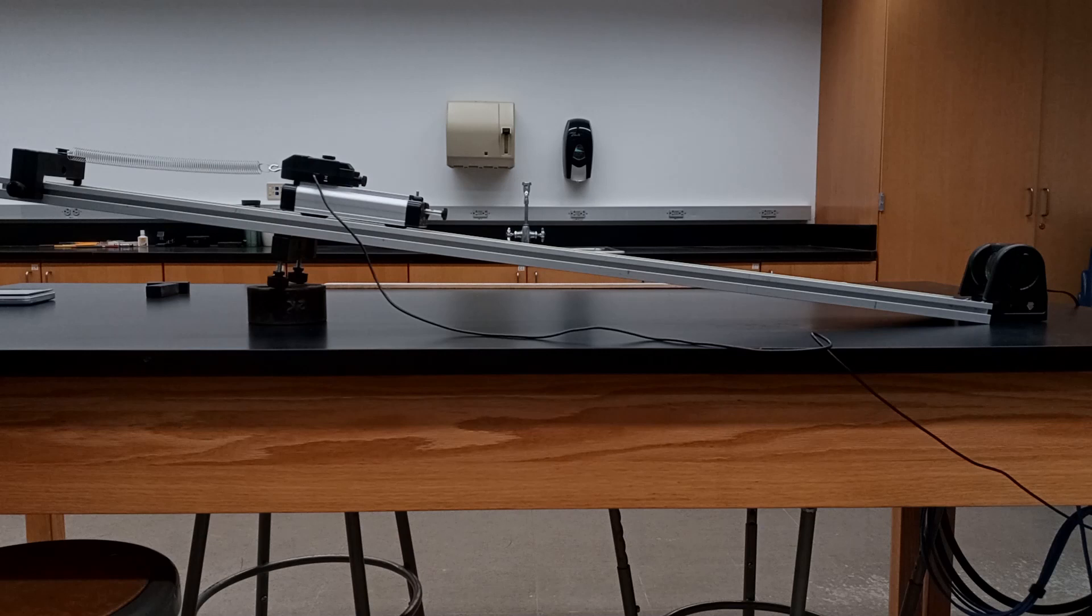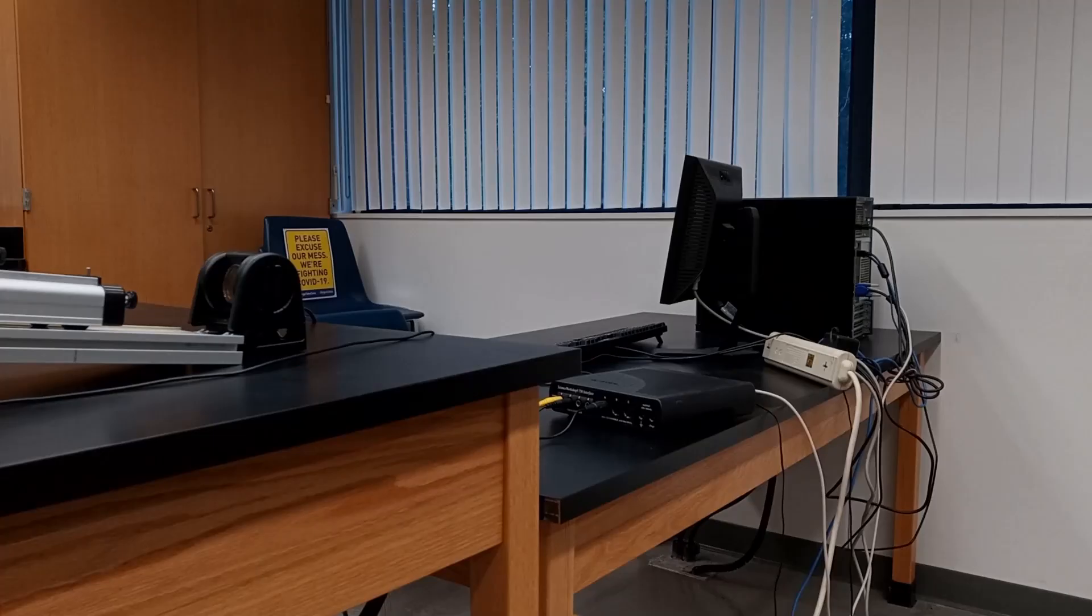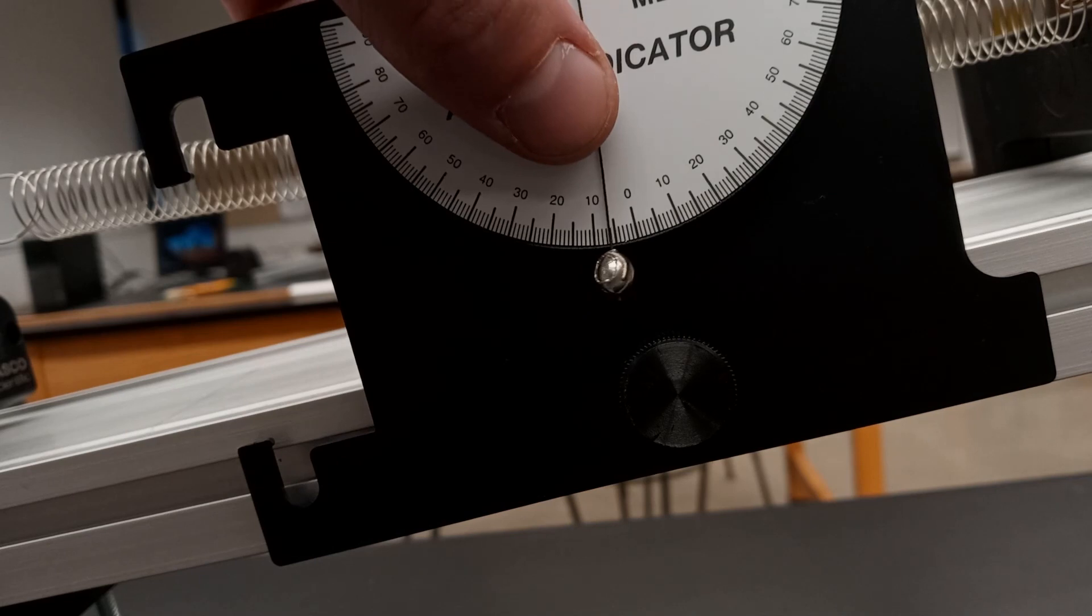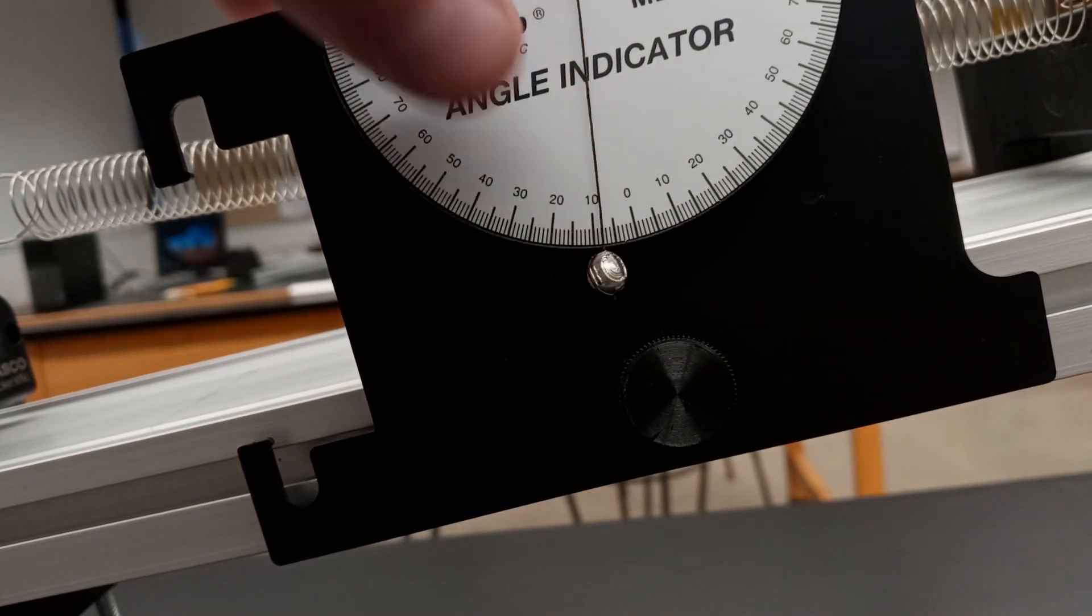A motion sensor at the far end of the track measures the cart's position and velocity. The sensors are both connected to a science workshop interface, which is in turn connected to a computer with data logging software. An angle indicator will allow us to measure the incline angle of the track.